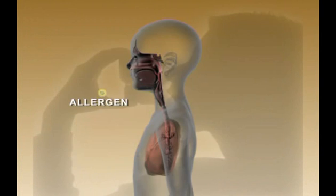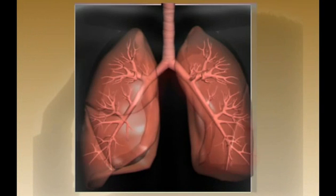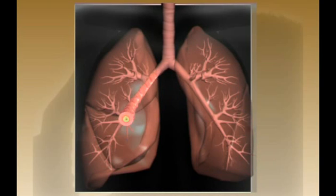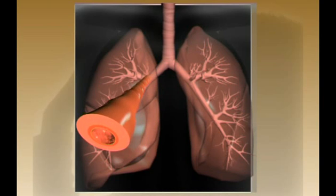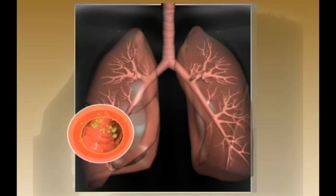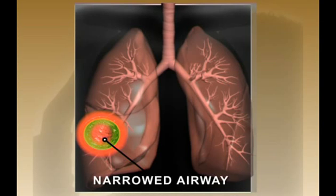Asthma is a chronic inflammatory disease in which the airways become sensitive to allergens, which are substances that trigger an allergic reaction. Because of these allergens, the lining of the airways gets swollen and inflamed. The muscles that surround the airways tighten up, and the production of mucus is increased, causing the airways to become narrow. This makes it difficult for air to go in and out of your child's lungs, causing the symptoms of asthma.